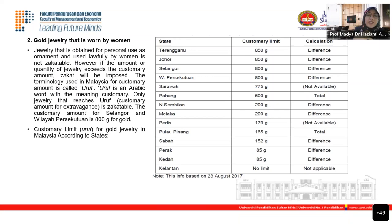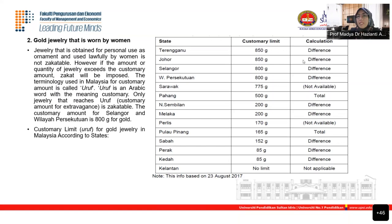Next is zakat on money. Money is used as a measurement of value, medium of exchange, and storage of value. Both intrinsic and fiat money have purchasing power like gold. The nisab for zakat on money is also equivalent to the current value of 85 grams of gold, and the rate is 2.5%. For savings in a conventional account, any interest or impermissible element must be excluded. Example: with transactions during the year resulting in an ending balance of RM19,600, minus RM200 interest = RM19,400. Zakat at 2.5% = RM485.